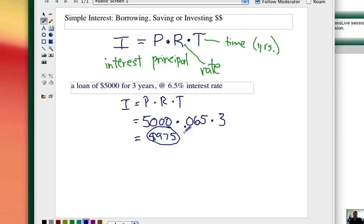That's just the interest. What's the total to pay back? Well, that would be your $5,000 that you borrowed in the first place, plus the $975 that you have to pay extra at the end of the three years.